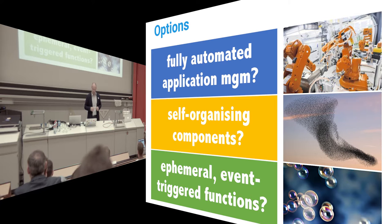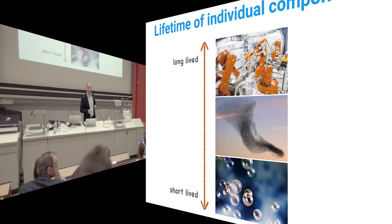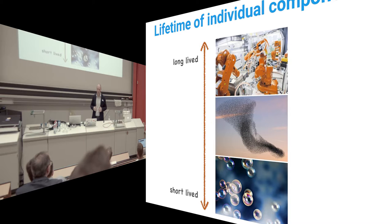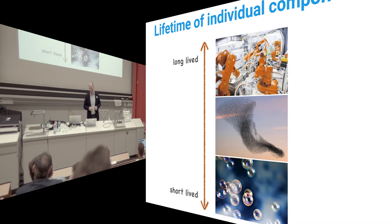An interesting aspect of these three models is that the lifetime differs between them. The individual components have different lifetimes — functions only live a few milliseconds. But also the layout of the whole system has a different lifetime. If you set up servers and applications manually, the topology has quite a long lifetime. With ephemeral functions, you will never know what the connections between functions were in the last millisecond.